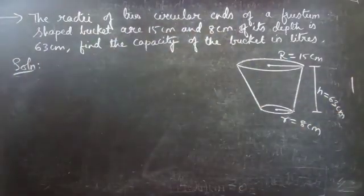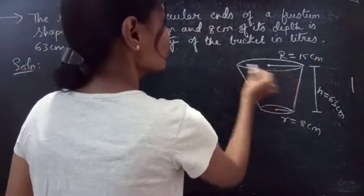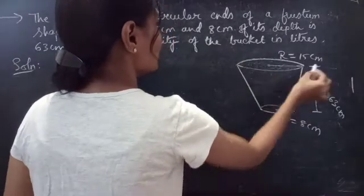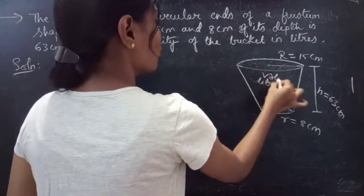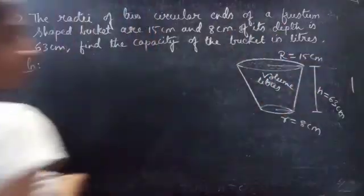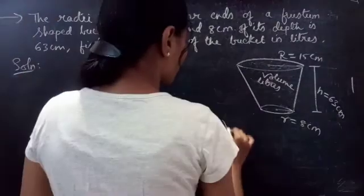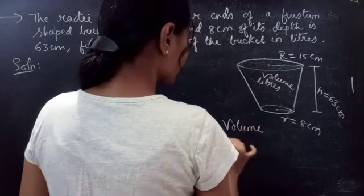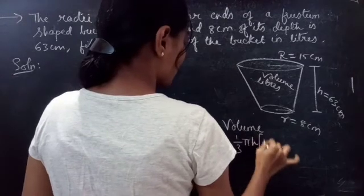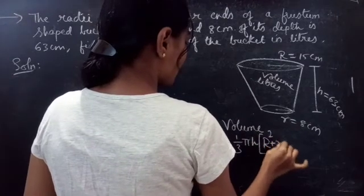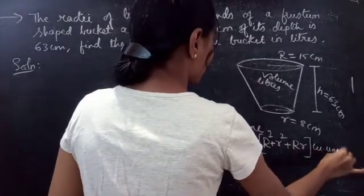Now we have to find the capacity of the bucket in liters — that is, we have to find the volume of the frustum. We know the formula: volume of a frustum equals 1/3 × π × h × (R² + r² + R·r) cubic units.